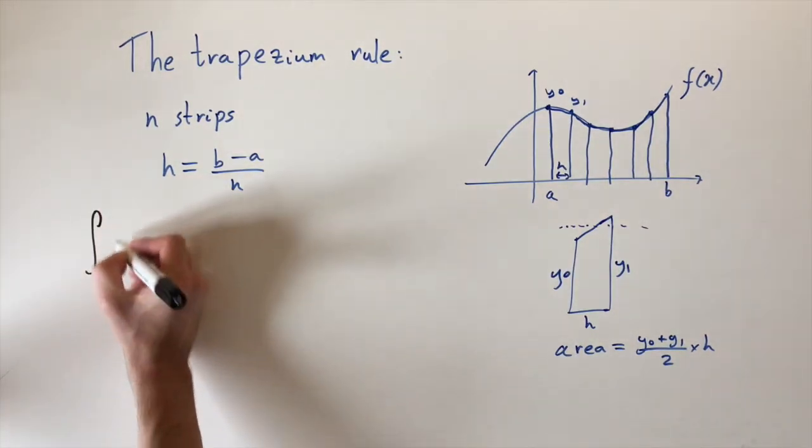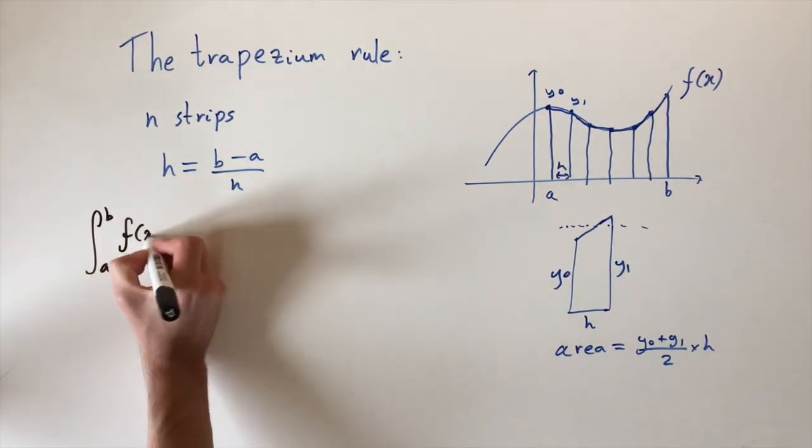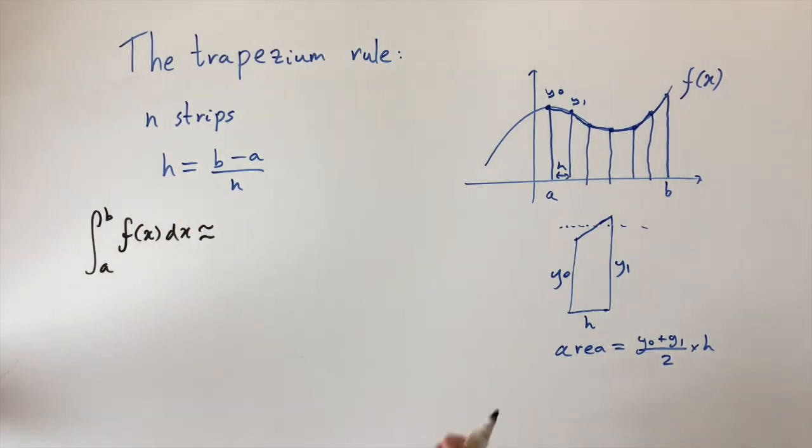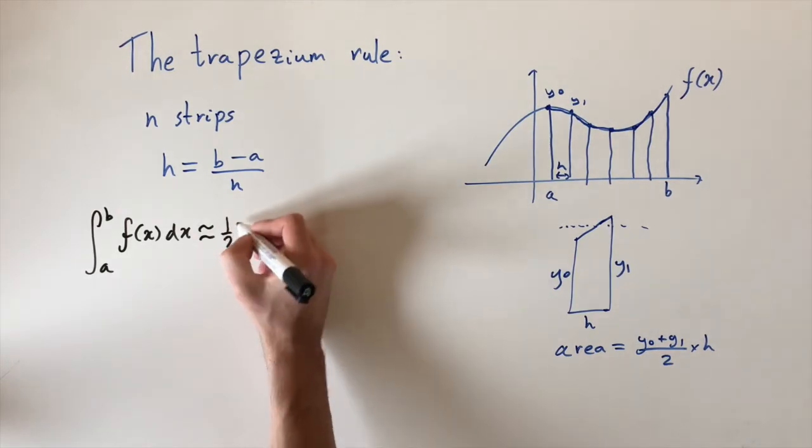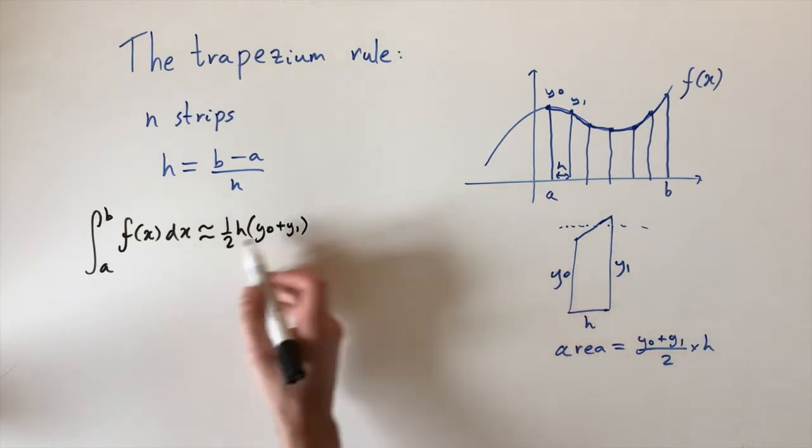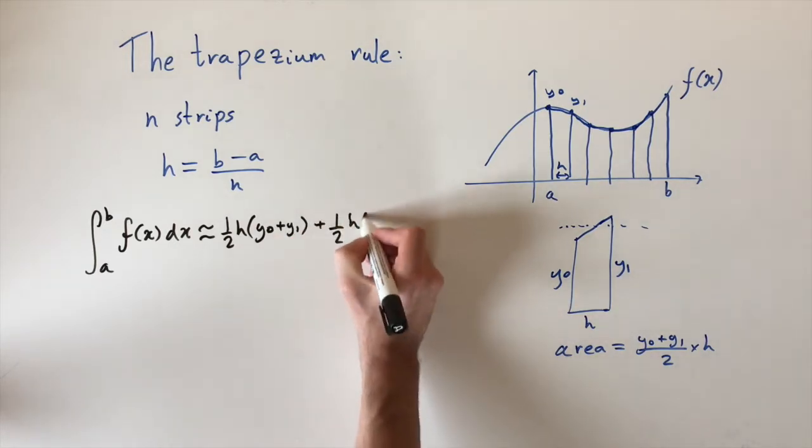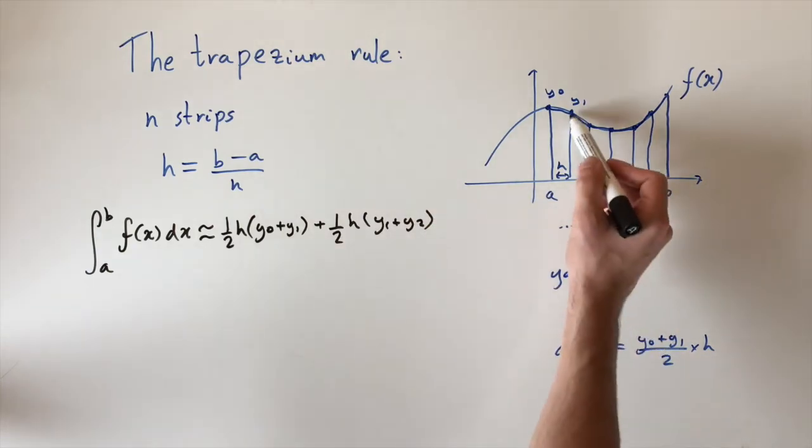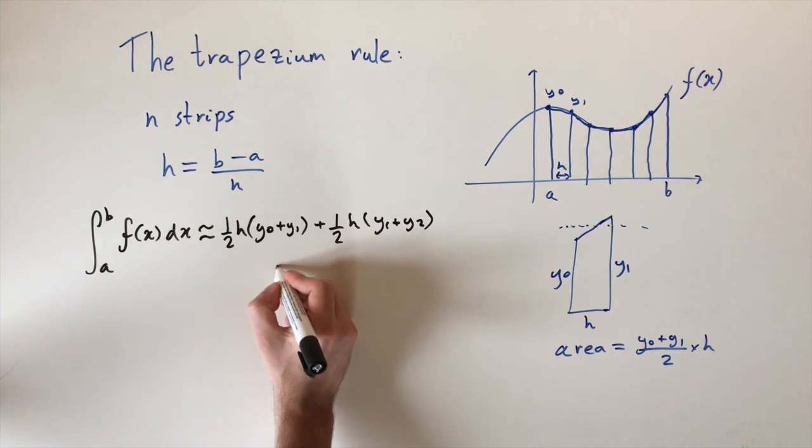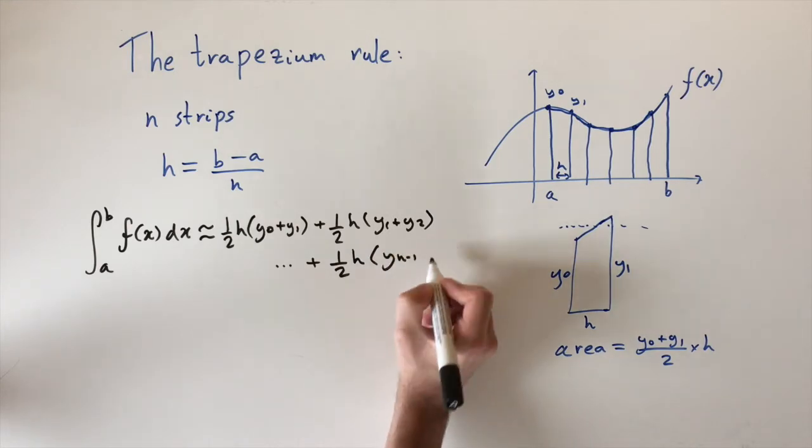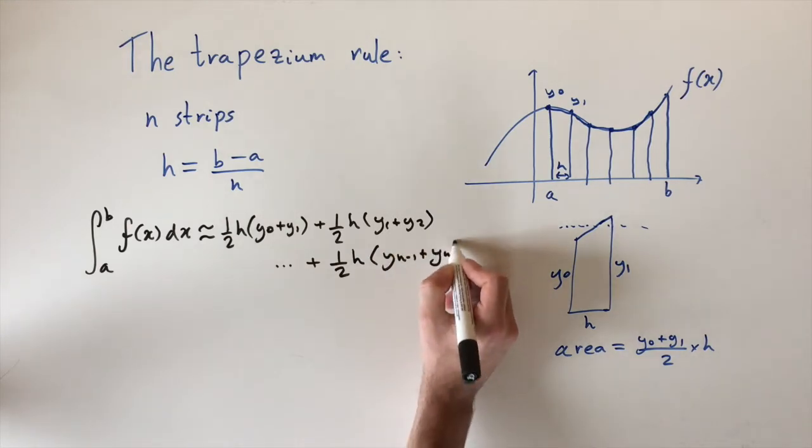So then the integral between a and b of f(x) dx, or the area under this curve, is approximately all these areas. It's going to be half times h plus the sum of the function evaluated at these two points. That's the first trapezium. The second one is the same except we have y1 plus y2. Then imagine carrying on for all these intervals. This last one would be half times h times yn minus 1 plus yn, if yn is the last one.